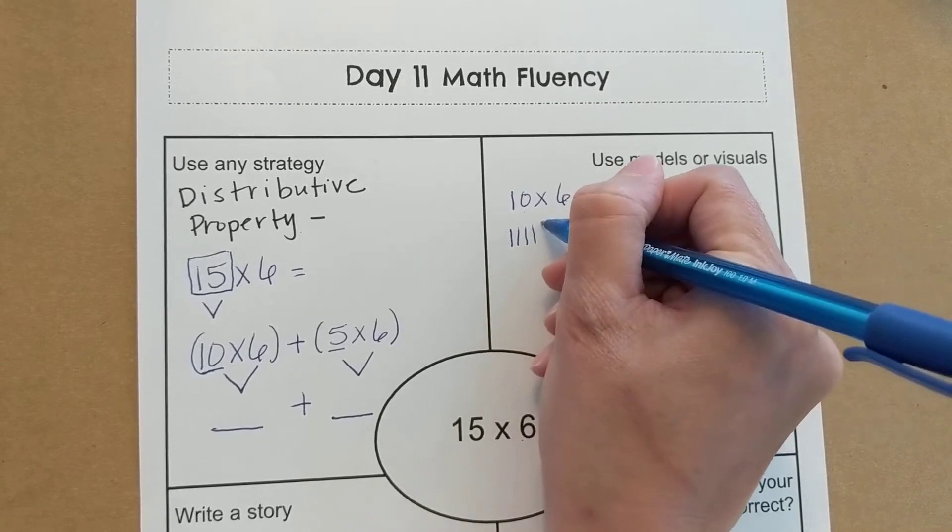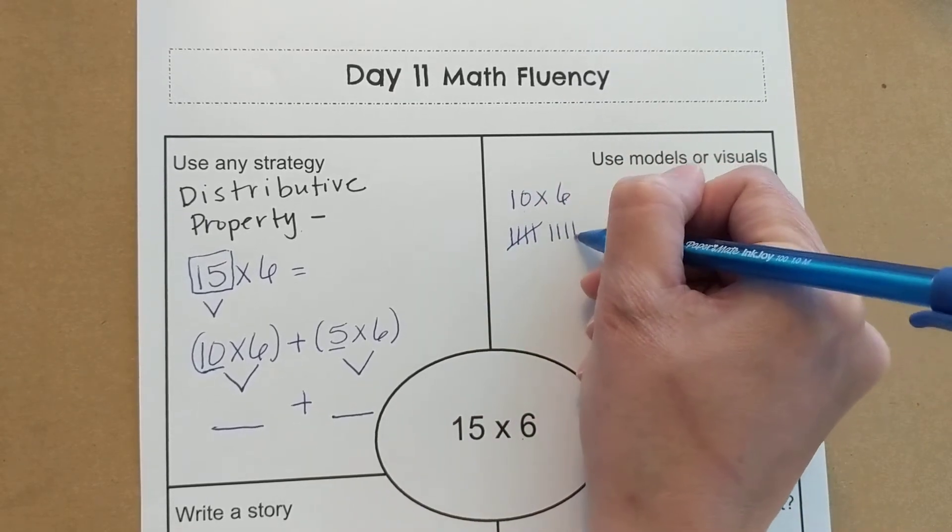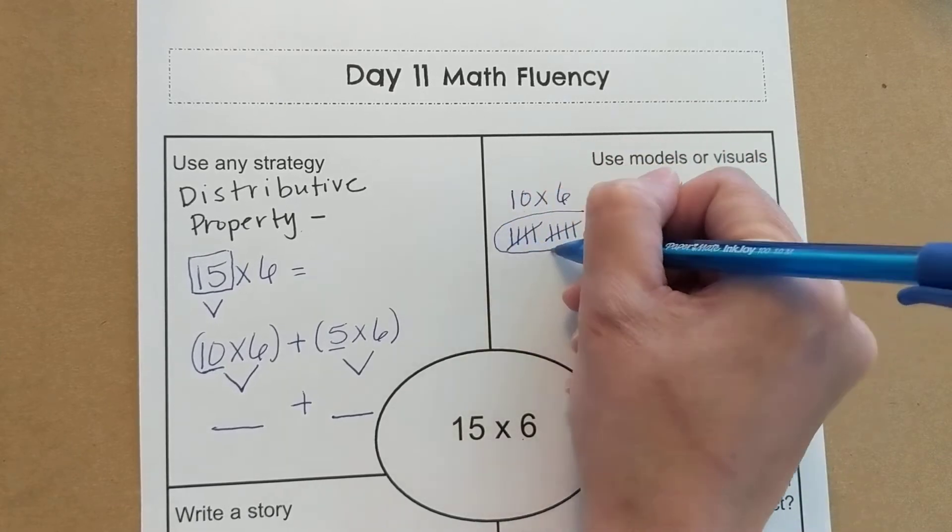So 1, 2, 3, 4, 5, 6, 7, 8, 9, 10. There's one group of 10.